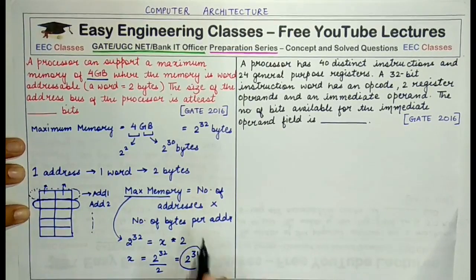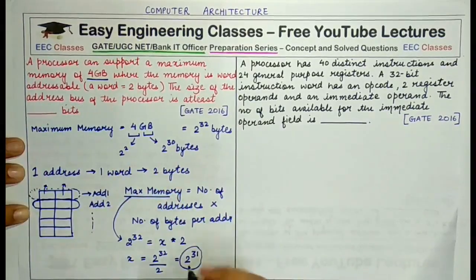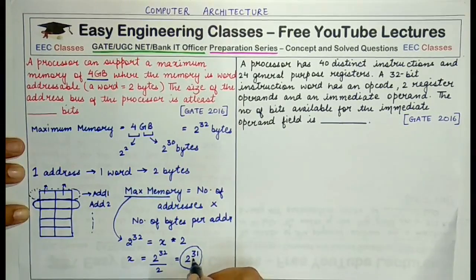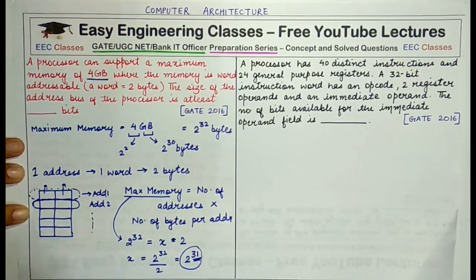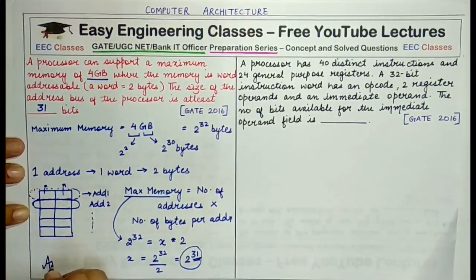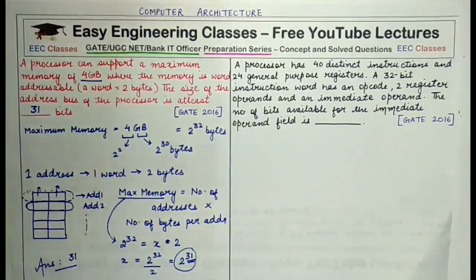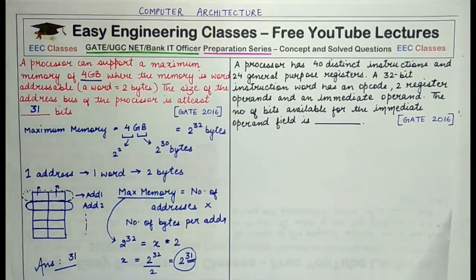Please be careful: 2 raised to power 31 is the number of addresses and not the size of the address bus. If the total number of addresses is 2 raised to power 31, then the total number of address lines — the size of the address bus — would be 31. So the answer is 31 and not 2 raised to power 31, because using 31 address lines you can represent 2 raised to power 31 combinations, representing all your addresses.